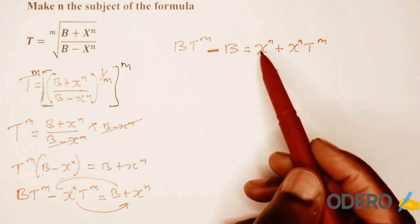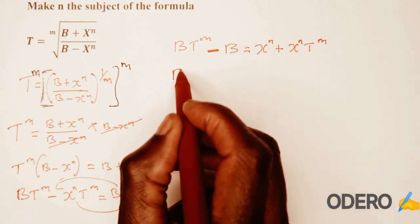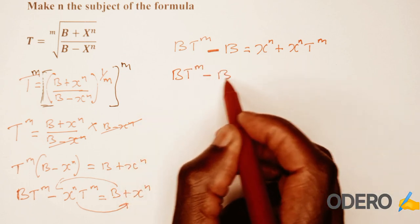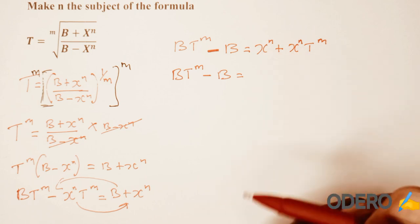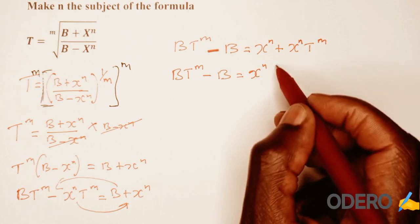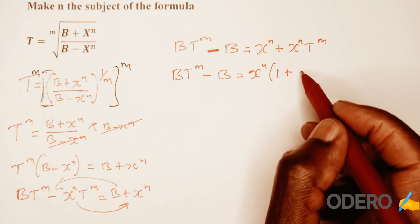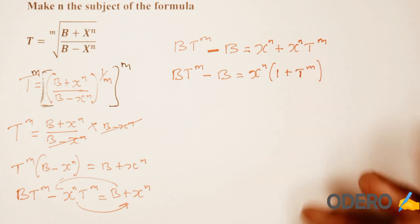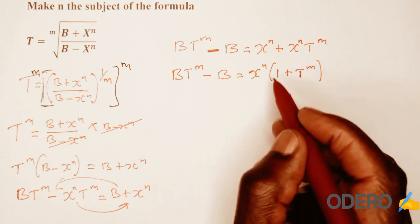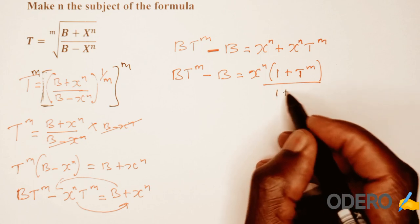From there, check what is common here — we have x raised to n and x raised to n. So b t raised to m minus b is equal to — factor out x raised to n, that will be x raised to n into, so 1 plus t raised to m will remain in that bracket.